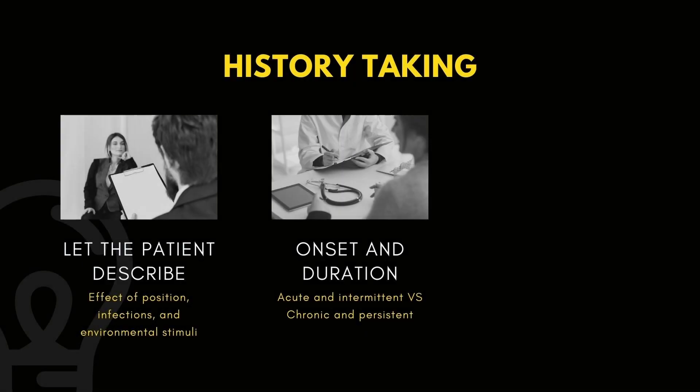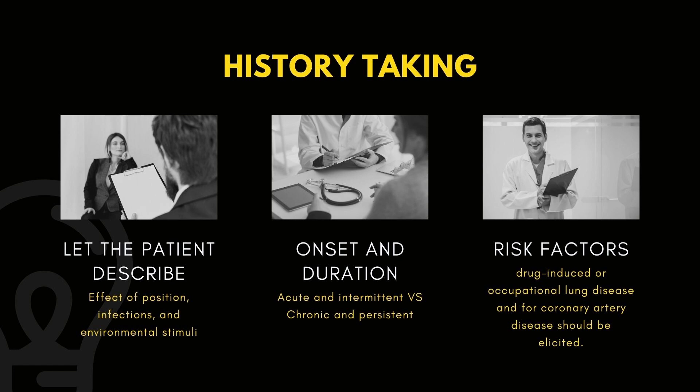Next, we determine the onset and duration. Acute intermittent episodes of dyspnea are more likely to reflect episodes of myocardial ischemia, bronchospasm, or pulmonary embolism. While chronic persistent dyspnea is more typical of COPD, interstitial lung disease, chronic thromboembolic disease, information and risk factors for drug-induced or occupational lung disease, and coronary artery disease should be elicited.